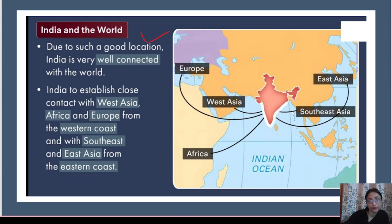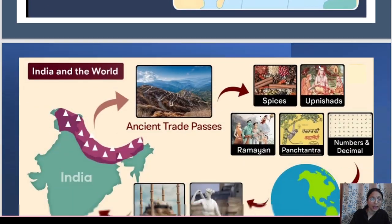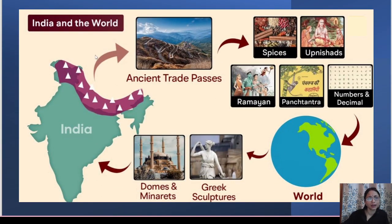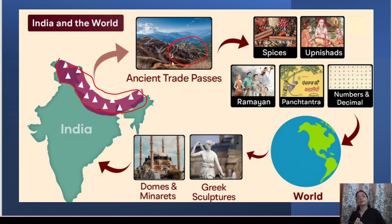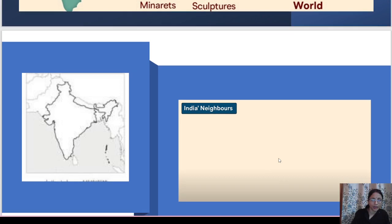Due to India's strategic location, India is very well connected with the world via the Indian Ocean. India can stabilize close relations with West Asia, Europe, Africa, Southeast Asia, and East Asia. The Himalayan passes allowed ancient trade routes through which spices, goods, and cultural influences like the decimal number system, Ramayana stories, Greek sculptures, and domes spread to and from other countries.